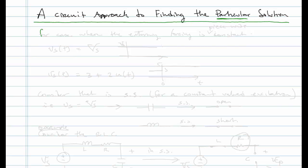Now this is going to be for the case where the external forcing is constant, or at least we're going to say it's piecewise constant. So for instance, we could have a Vs of t that is equal to just Vs for all time, or we could have a Vs of t that is equal to 3 plus 2u of t, which would be 3 for all time up to 0, and then it steps up to 5.